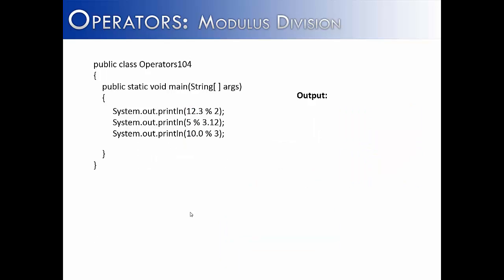On this slide, I've shown that modulus division can be used with real numbers. Now, it's not nearly as common to use modulus division with real numbers because real numbers already have a remainder and it's expressed as the decimal point. But it is absolutely legal to use real numbers with modulus division. So let's see how they output. On the first system out print line, we have 12.3 mod 2, and 2 goes into 12 an even amount of time, 6 times, and the remainder would be 0.3.